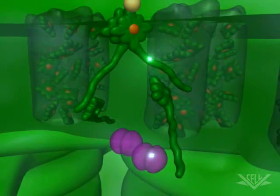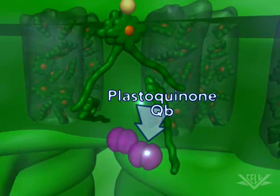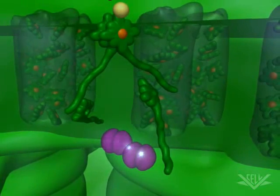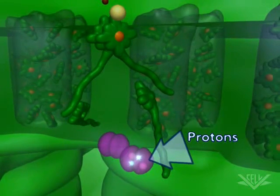Once excited, two electrons are transferred to plastiquinone QB, the first mobile carrier. In addition to the two electrons, QB also picks up two protons from the stroma.